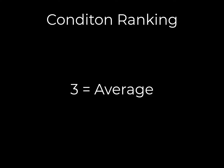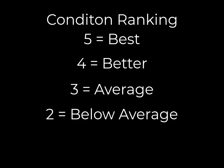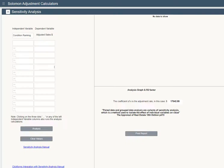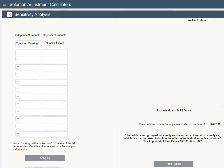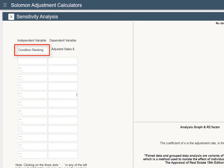Let's say you want to rank comparables by condition. Use 3 for average, 4 for better, and 5 for best. Below average would be 2, and poor condition would be 1. Label the independent variable as Condition Ranking.